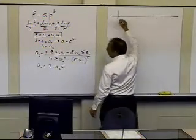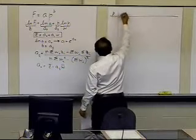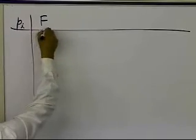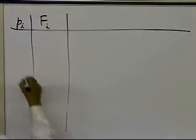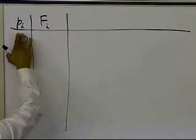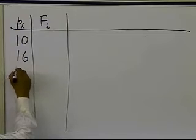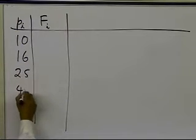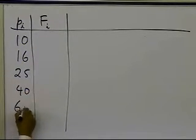I'm going to repeat the data which is given to me. The p-sub-i values are given to me as 10, 16, 25, 40, and 60.